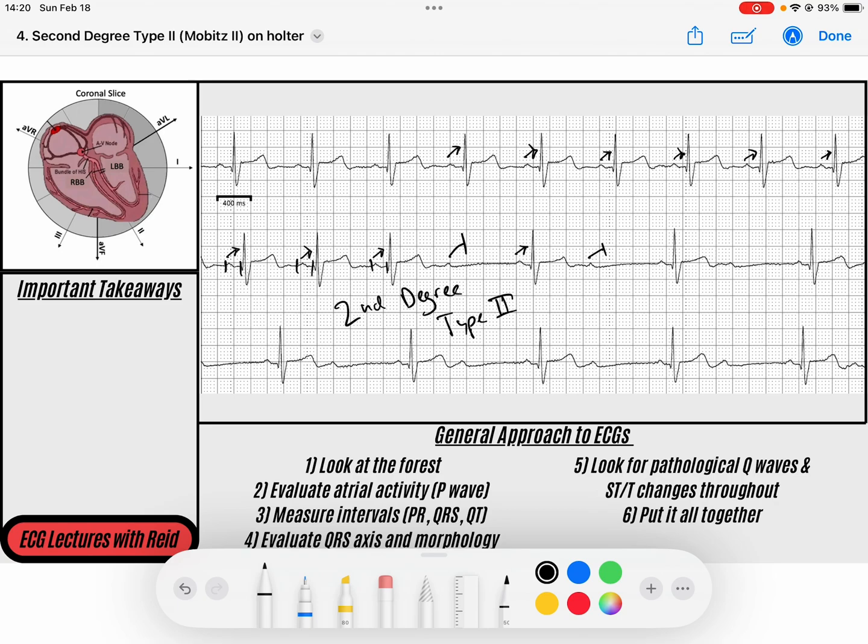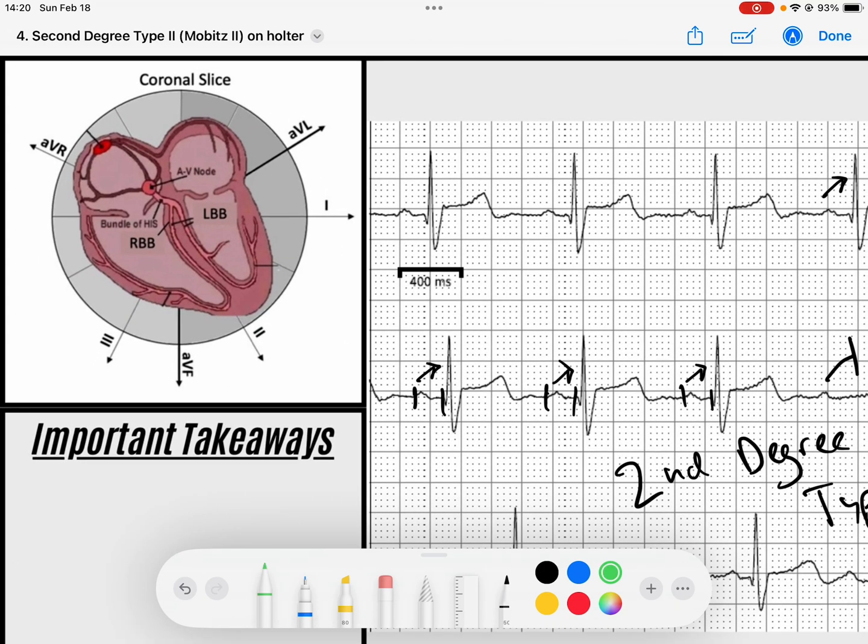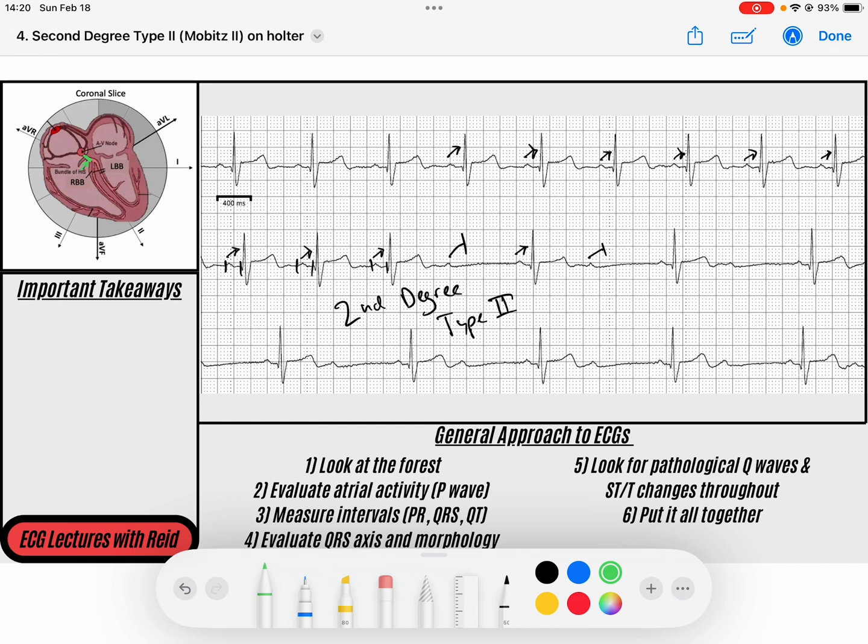Remember, this is because the site within the AV junction that is getting hit or diseased is that His bundle. Normally, you can see here we have a P wave that conducts to the QRS and a P wave that's blocked, a P wave that's conducted to the QRS and then a P wave that's blocked. You can see that this is what we would call 2 to 1 AV conduction. When it's 2 to 1, we don't get - in order to say that this is a type 1 or a type 2, we need to have consecutive P-QRS complexes. And we get that here. We see that behavior before the drop happens, so we know this is a second degree type 2.